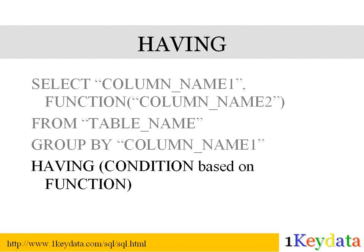Previously, we had talked about using the WHERE keyword to filter results. What if we want to filter based on the results of a function? Can we also use WHERE for this? The answer is no. The reason is that we need to specify the filtering condition after SQL has calculated the function, so any filtering condition based on the function needs to be specified after the GROUP BY clause. We cannot use the WHERE keyword because it is always used before GROUP BY. This is where the HAVING keyword comes in. The syntax for HAVING is: SELECT column_name_1, function(column_name_2) FROM table_name GROUP BY column_name_1 HAVING condition_based_on_function. In our example, if we only wanted to show results where the maximum sales amount is over 100, we will add HAVING sales_amount greater than 100 at the end of the SQL query.